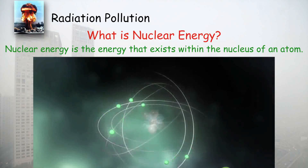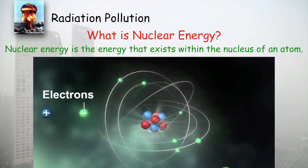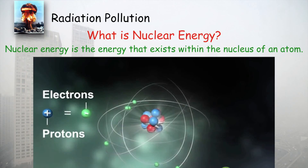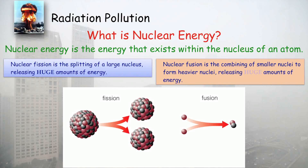Fission means when a bigger nucleus breaks into two smaller nuclei. Fusion is when two smaller nuclei fuse together to make a bigger nucleus. Generally, fusion reaction is the source of energy on the Sun, where four hydrogen nuclei combine to make one helium nucleus — that is a fusion reaction.